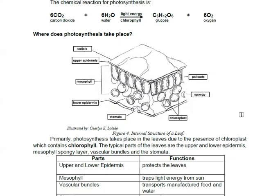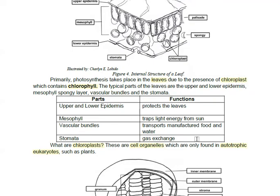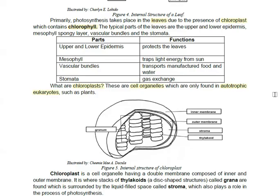So where does it happen? It happens in the leaves. And this is because of the chloroplast. You see it in the leaves because the leaves have chloroplast, which contains chlorophyll. So these are the parts of the leaves and their functions.